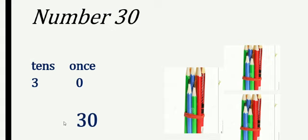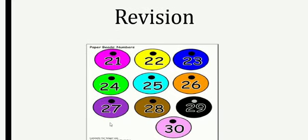This is our task. Our first task was counting from 21 to 30, which is now complete. Let's revise: two, one — twenty-one; two, two — twenty-two; two, three — twenty-three; two, four — twenty-four; two, five — twenty-five. And today's lesson: two, six — twenty-six; two, seven — twenty-seven; two, eight — twenty-eight; two, nine — twenty-nine; and three, zero — thirty. These were our words from 21 to 30, learned over two days — 21 to 25 on the first day, and 26 to 30 today.